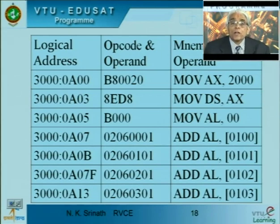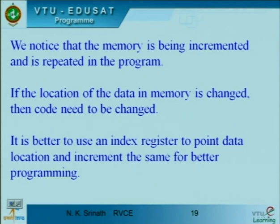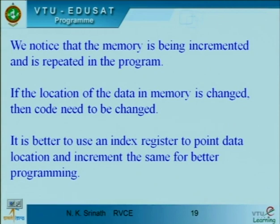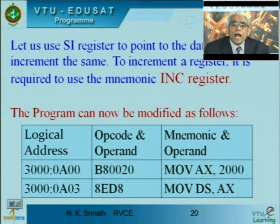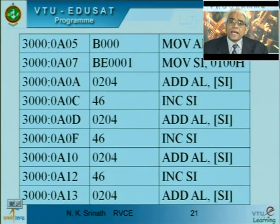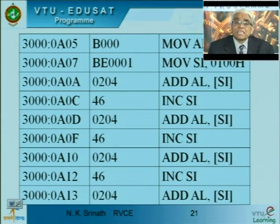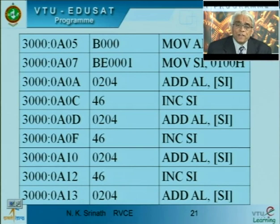If the address changes, you would have to rewrite the program considerably. To avoid this, we initialize a register as a pointer to that memory location. Using SI as the pointer and the INC instruction — which increments a register's content by 1 — we initialize DS, set AL=00, set SI=0100h, then ADD AL, [SI] and increment SI three times to get the result of adding all four numbers in AL.